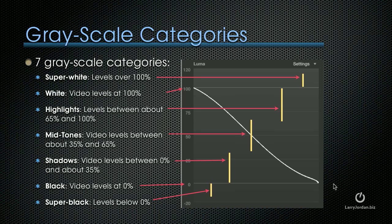In Final Cut 7, we never had to worry about super black because Final Cut 7 clamped black levels at 0, but not Final Cut 10. Final Cut 10 allows super blacks to extend all the way down to negative 10, and super whites to extend up to 110. This is important because we can get into trouble if our videos have blacks that extend below 0 or whites that extend over 100%. I'll show you how to block that, both manually and using the broadcast safe filter, during the course of this webinar.